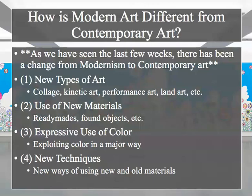Some key differences to think about: new types of art including collage, kinetic art, performance art, and land art. We have the use of new materials — ready-mades, found objects, etc. Expressive use of color, and new techniques — new ways of using new and old materials. They all have to do with materials and utilizing them in different ways.